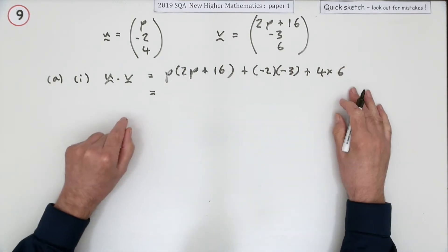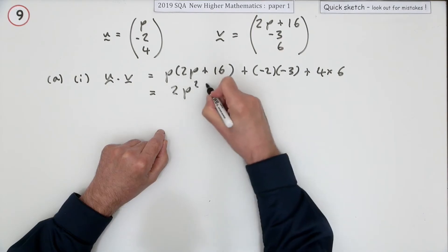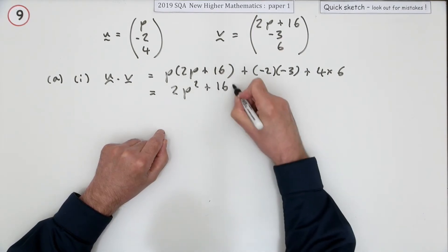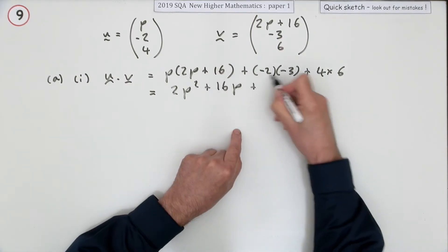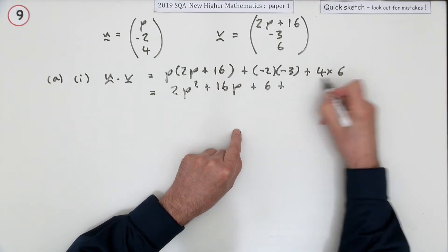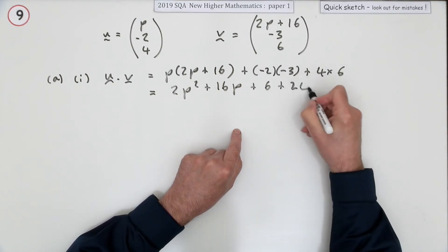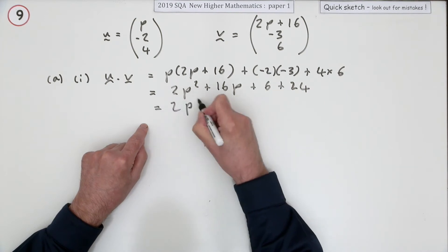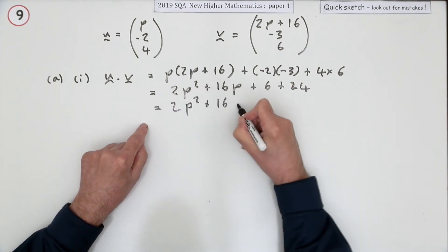I presume it means tidy it all up, so you've got 2p² plus 16p plus 6 plus 24, so that's 2p² plus 16p plus 30.